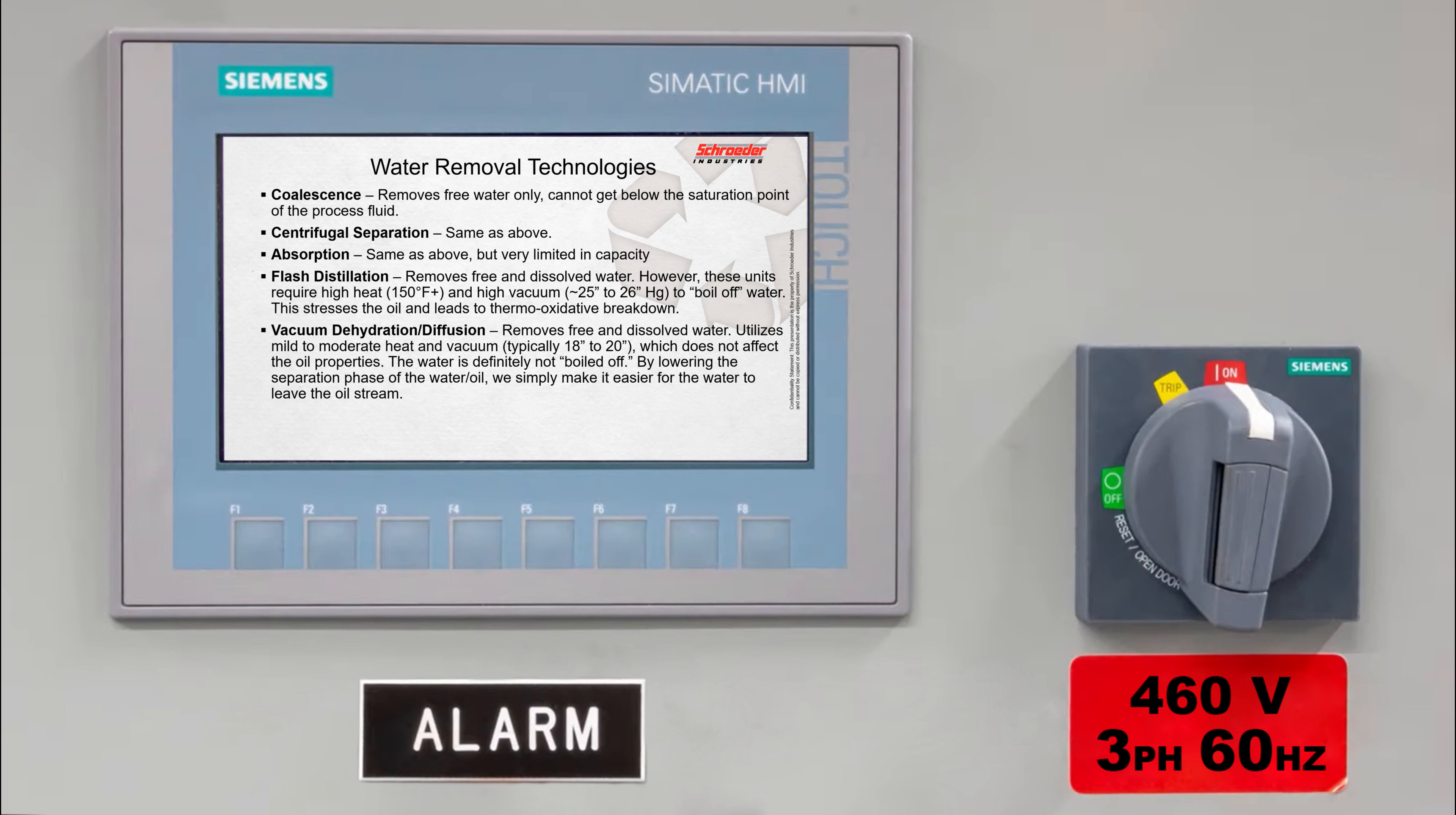What we use on our NAV is a mass diffusion type dehydrator. We'll remove free and dissolved water, but we're going to do it with moderate heat and a much lower vacuum, typically around 18 to 20 inches of vacuum. We only really need 125 degrees of temperature. It gets a little faster at water removal up to 140, but that's really all the temperature that we need to do it. We're basically lowering the separation phase of the water in the oil and we'll pull it out that way.